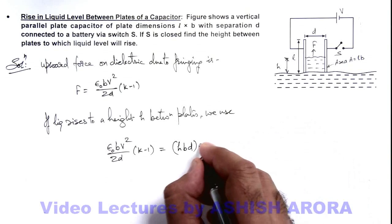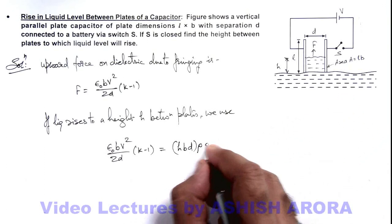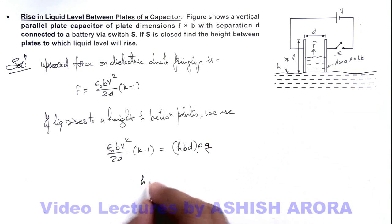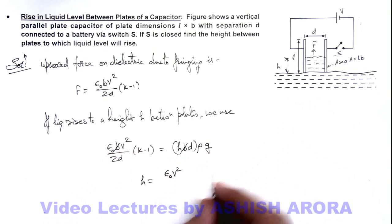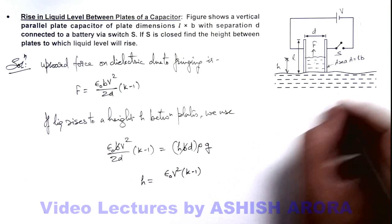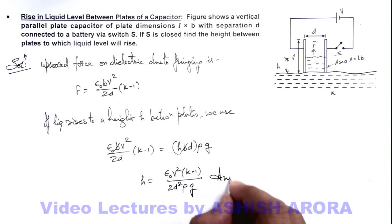Multiplied by ρ - I am taking here ρ as the density of liquid - multiplied by g, that is the weight of this liquid. So this will give me the value of h: that is ε₀V²(k-1) - here b gets cancelled out - divided by 2d²ρg. That will be the answer to this problem.